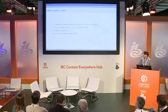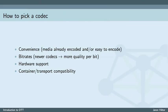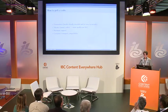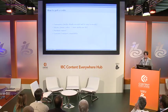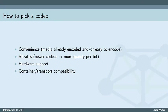So how do you pick a codec? The main reason is convenience — you may already have media encoded in a particular codec or it might be easy to switch to it. Another big reason is bit rates, because newer codecs generally offer better quality per bit, and since internet connections have a maximum speed, it's important to send the best quality in the least amount of data. Hardware support is another big factor because encoding and decoding video is processor-intensive, so you'll want hardware acceleration. For example, if content is H.265 and highly definition and you're watching on a cell phone with no hardware support, it's a real problem. Finally, container and transport compatibility can also dictate your codec choice.